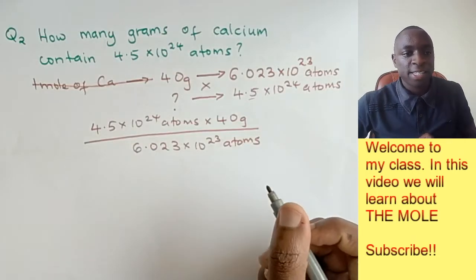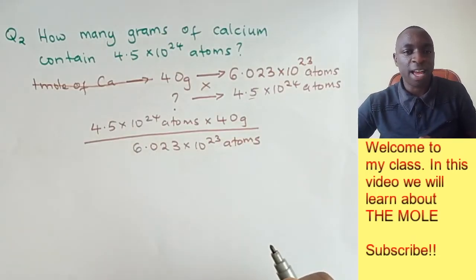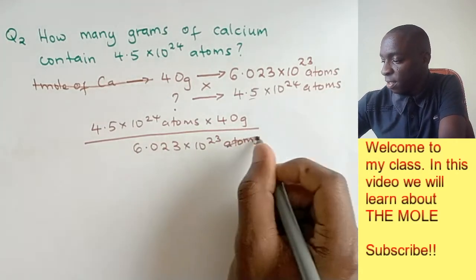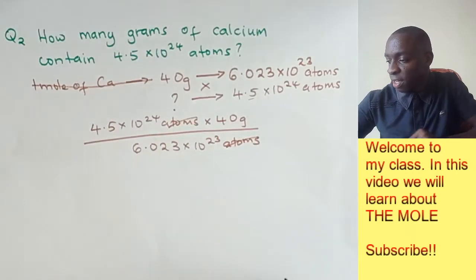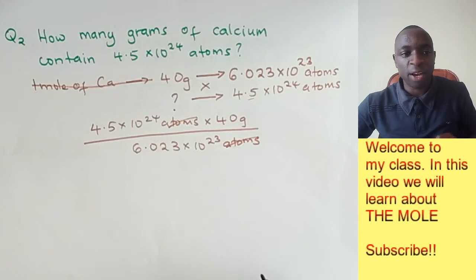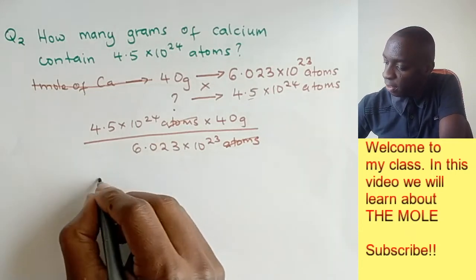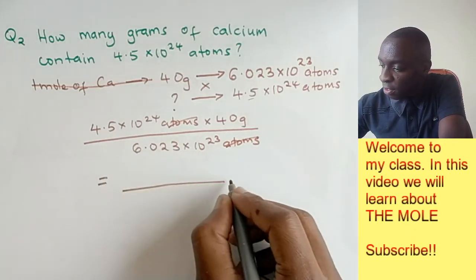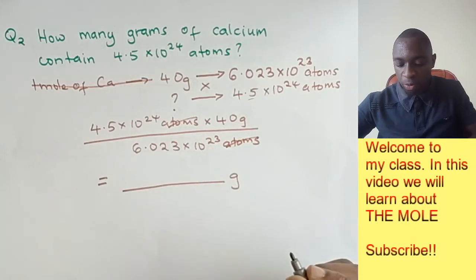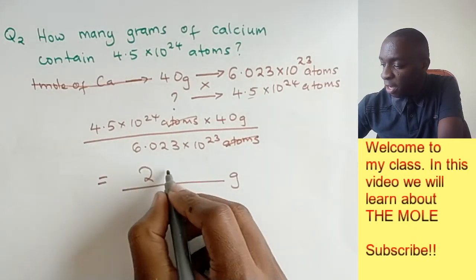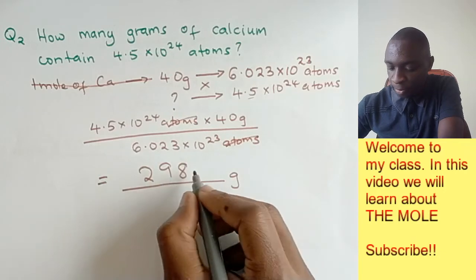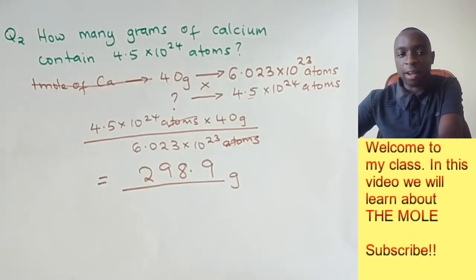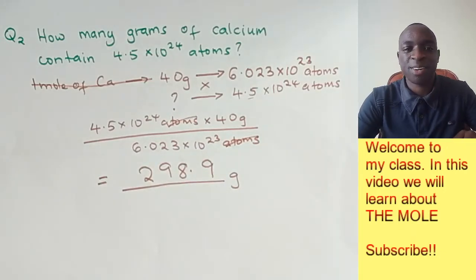We'll cross multiply: 4.5 times 10 to the power of 24 times 40 over 6.023 times 10 to the power of 23. Cross out the atoms because they're on opposite sides of the fraction, then multiply. Our answer will be in grams. Once you multiply, you end up with 298.9 grams.